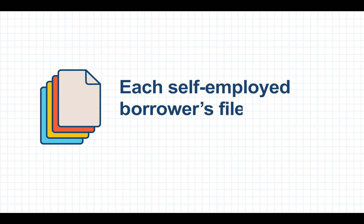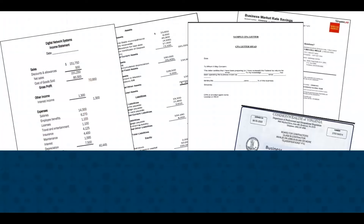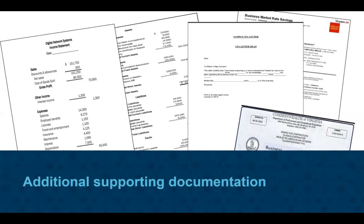Each self-employed borrower's file is different — some may be very simple, others very complex. Each file should be reviewed to determine if any additional supporting documentation is needed. Set the expectation for your self-employed borrowers that additional documentation such as profit and loss statements, balance sheets, business bank statements, recent business receipts, CPA letters, or copies of state or business licenses along with other documentation may be needed.